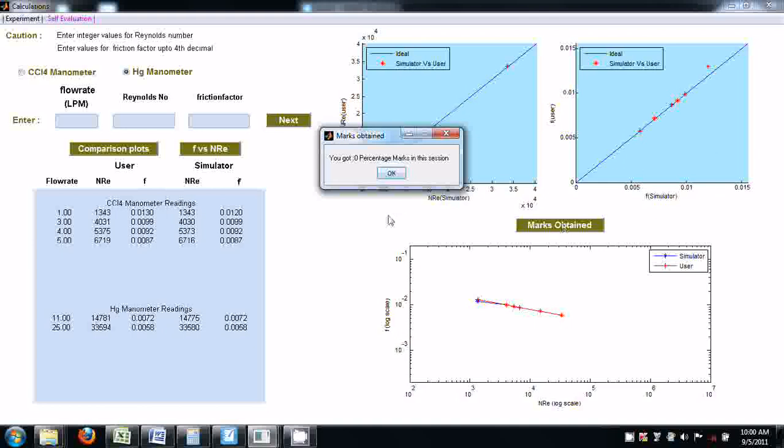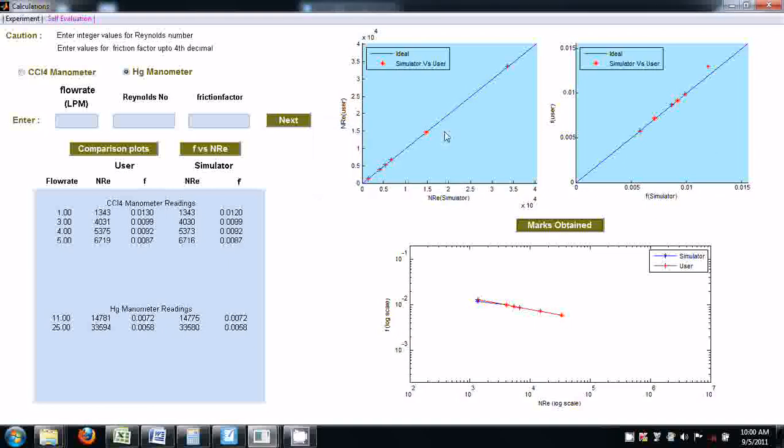Then click on marks obtained. This is because no value you entered is coinciding with the simulator calculated value. Reynolds number is correct, but the friction factor is not correct up to the fourth decimal. Here Reynolds number itself is wrong. Even though your values are almost nearer, these are not exact values, so you got 0 marks.